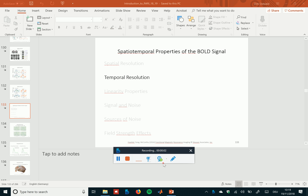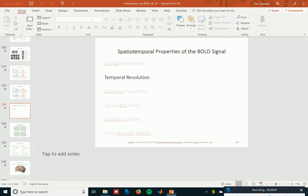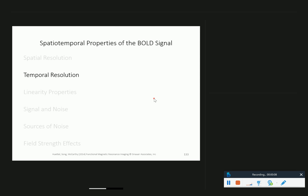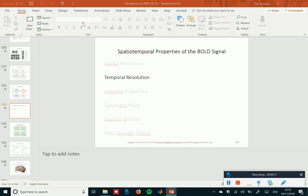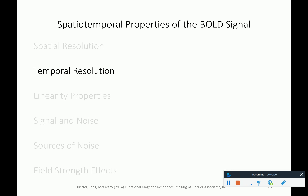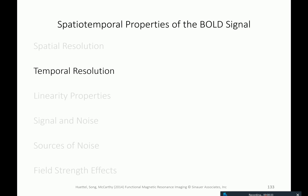Let's continue with neurocognitive methods. We discussed last time the spatial resolution of fMRI and considerations in this regard, and we ended on discussing this new paper on layer-specific fMRI and working memory. We continue with our consideration of the spatial-temporal properties of the BOLD signal and fMRI.